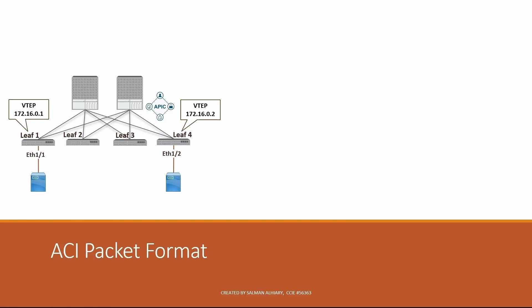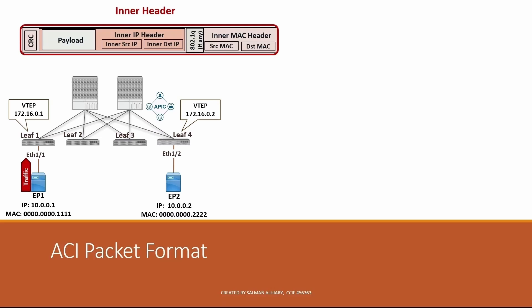Let's look at an example of what the encapsulated packet format looks like — we'll focus only on the packet format here. Endpoint 1 is connected to leaf 1 with IP address 10.0.0.1 and MAC address 00:11:11:11:11, and endpoint 2 is connected to leaf 4 with IP 10.0.0.2 and MAC 00:22:22:22:22 — both in the same subnet. When endpoint 1 sends a packet to endpoint 2, the original packet, called the inner header, consists of a payload carried on a layer 3 IP packet, which is carried on a layer 2 frame or MAC header.